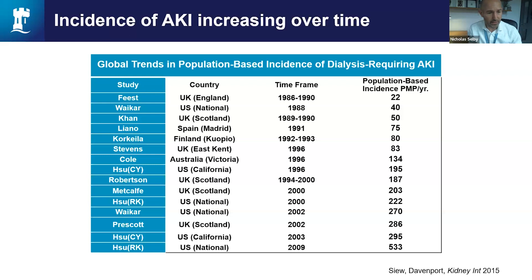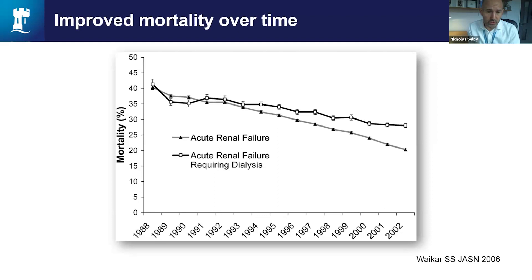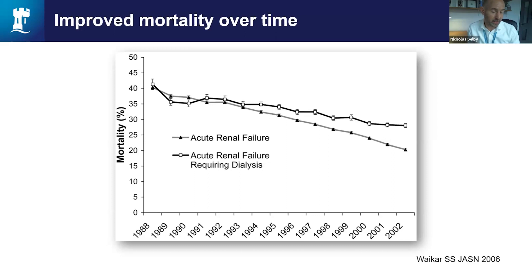At the same time, there's been a trend towards an actual improvement in mortality, though this might be affected by a change in the denominator as we widen the scope of patients we define as having AKI. But the most important thing to note is that even with that fall, mortality rates still remain exceptionally high — above 20% in hospitalised patients with AKI, compared to the 2 or 3% you'd see across non-elective admissions.